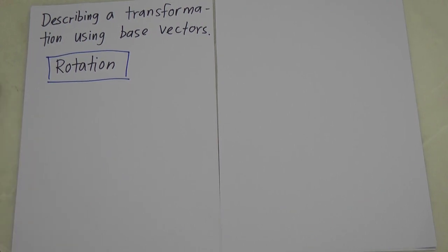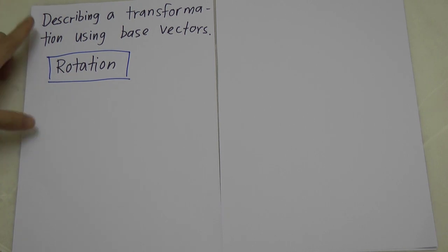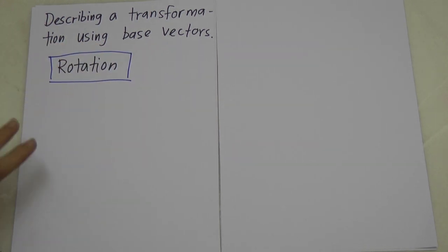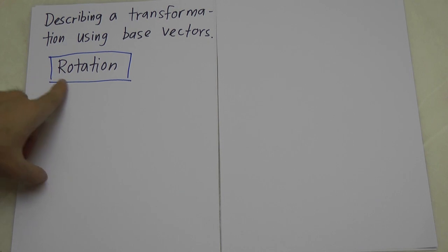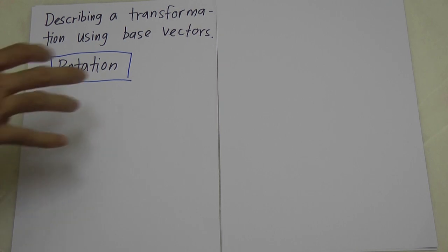I want to make this video because one of my friends asked me about this topic. This is the first video I've made about IGCSE A-level, because at A-level there are transformations and they use matrices. This part is called describing a transformation using a base vector. In this video I'm going to keep it short and only discuss rotation — later we'll cover reflection and enlargement or stretch.